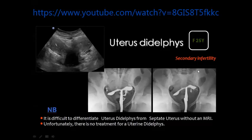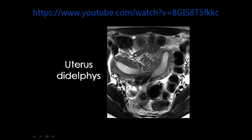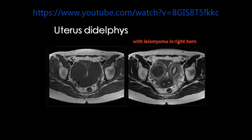Sometimes it is difficult to say for sure whether this is uterus didelphys or bicornuate uterus. Remember that in bicornuate uterus there is some fusion between the bodies of the uterus at some distance from the fundus. Here is uterus didelphys with two separate uterine cavities and two separate cervical canals. This is also uterus didelphys with a fibroid mass inside the uterine cavity — you see the body of the uterus on each side with its cervical canal, and the uterine cavity is distended by a low-signal mass characteristic of uterine fibroid.